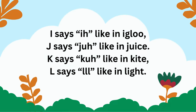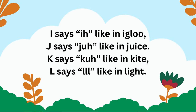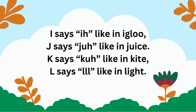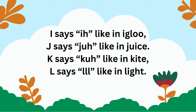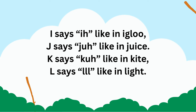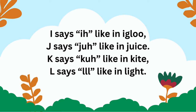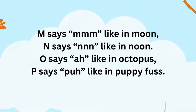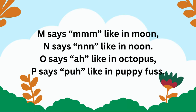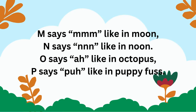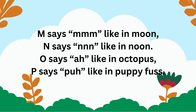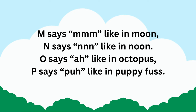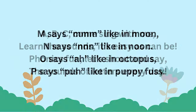Take note. I says I like an igloo, J says Q like an juice, K says Q like an height, L says O like an light, M says O like an moon, N says O like an noon, O says A like an octopus, P says O like an puppy fuss.